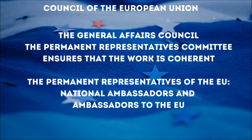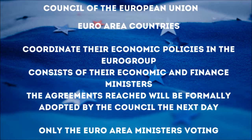It consists of the permanent representatives of the EU, who are national ambassadors to the EU. The Euro-area countries coordinate their economic policies in the Euro-group, which consists of their economic and finance ministers. It comes together on the days before the meetings of the Economic and Financial Affairs Council. The agreement reached at meetings of the Euro-group will be formally adopted by the Council the next day, with only the Euro-area ministers voting on the issues concerned.